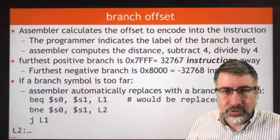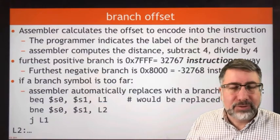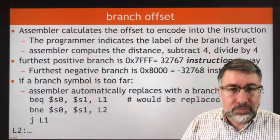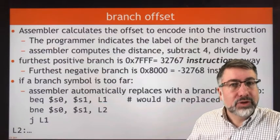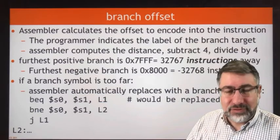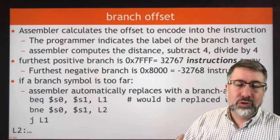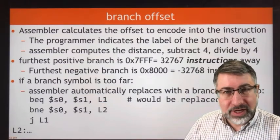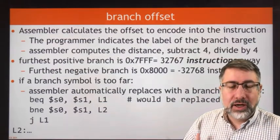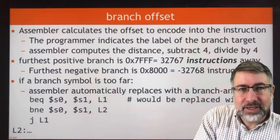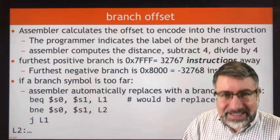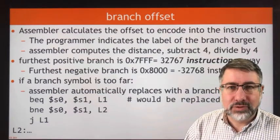A little bit about the way that branches are encoded, and then let's get into some examples of how to take a high-level language structure like a conditional or a loop and convert it into assembly language with branches. The offsets are stored in the immediate field, which is 32 bits, and they're stored by the number of instructions that you want to branch, positive or negative, which means it's a signed 32-bit number. That means it can go from negative 32,000 to positive 32,000, and that's plenty of distance for most relative branches.